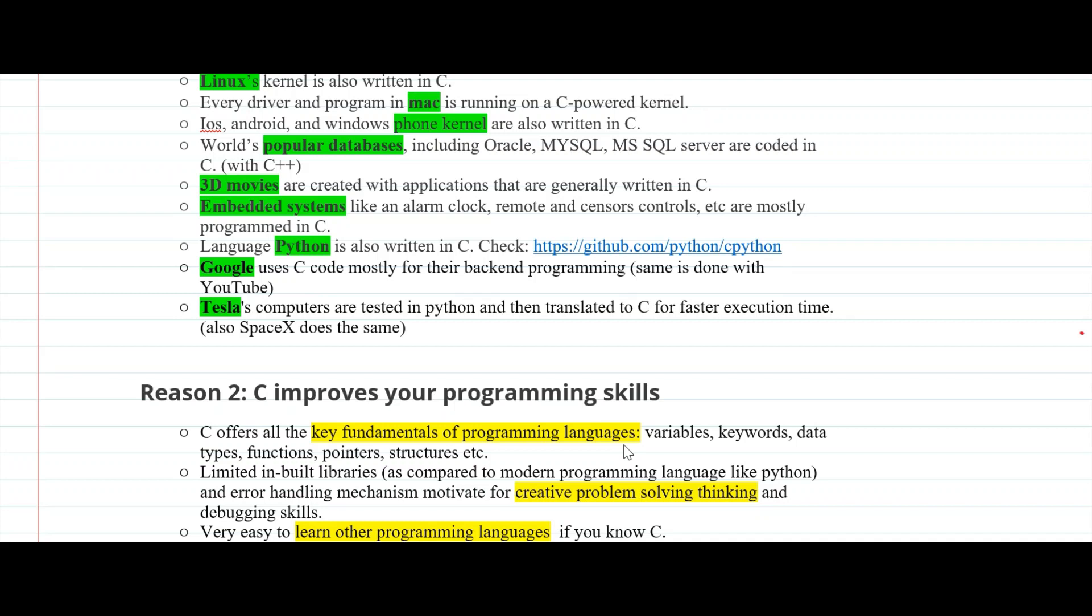It may be possible that some tasks can be easily done in Python just by writing a single line of code, but you won't be able to understand the insights without writing it in C. Because in C you may need to write hundreds of lines of code in order to solve the same problem. But by doing it you will get insights about the problem that will be helpful to you in the long run.